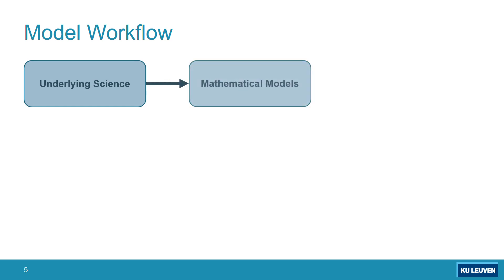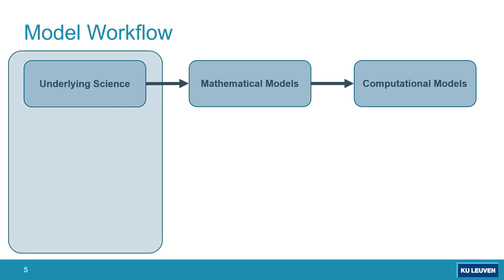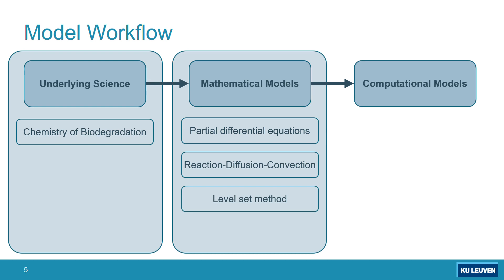The model workflow is: we convert the underlying science to mathematical models and then the mathematical models to computational models. The underlying science at this current stage of the project is the chemistry of degradation, but in the future it will also include the biology of new tissue growth as well as the physics of perfusion by bioreactors, in order to capture more accurate cell culture conditions. The mathematical models are mainly a set of diffusion, reaction, and convection equations to study mass transfer during degradation, as well as a level set equation in order to track the interface, because we need to know the shape of the scaffold during degradation.